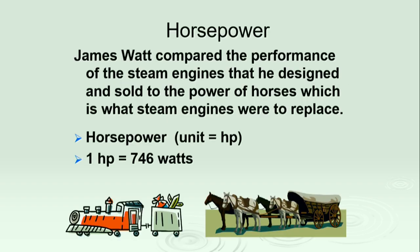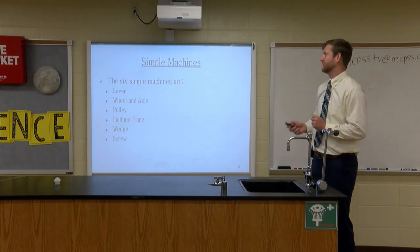Horsepower goes with power. One horsepower equals 746 watts. Where did that come from? James Watt — the watt is the unit of power. James Watt compared the performance of steam engines to the power of horses, and he said one horse produced 746 watts of power. So when you see car commercials advertising 600 horsepower, multiply 600 by 746 — that's the amount of watts those cars are producing.